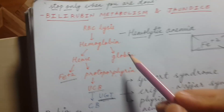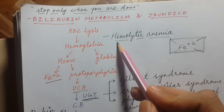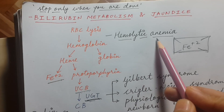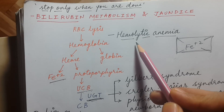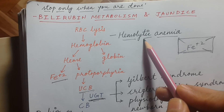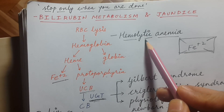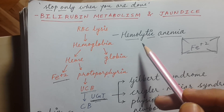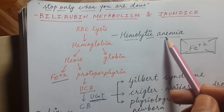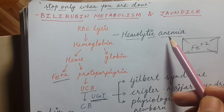We already discussed the first cause, hemolytic anemia. It can be due to any cause like hereditary spherocytosis or autoimmune anemia or any other cause.